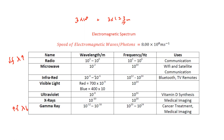Microwaves have a range around 10^-2 metres. Infrared is roughly 10^-4 to 10^-6 metres. Visible light ranges from 700 nanometres (7 × 10^-7 m) at the red end down to 400 nanometres (4 × 10^-7 m) at the violet end.